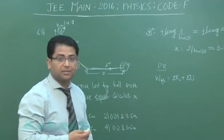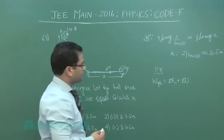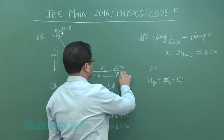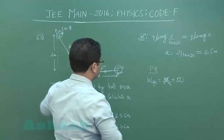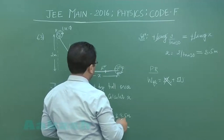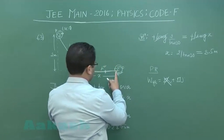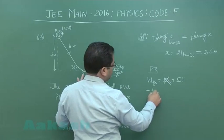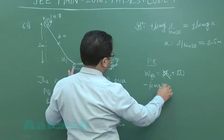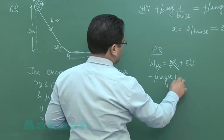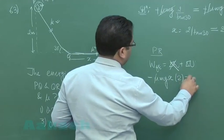If I use work done by friction, it would be change in kinetic energy plus change in potential energy. The normal reaction is of course there, but the work done by that is zero. Now see that delta K would be zero because the speed is zero here and initially it was zero as well.